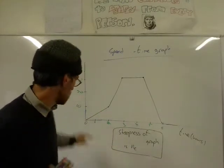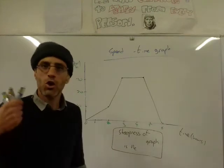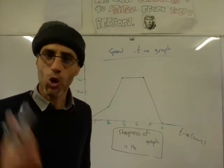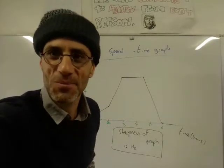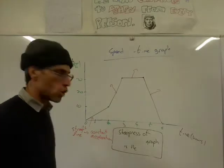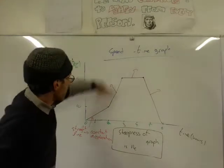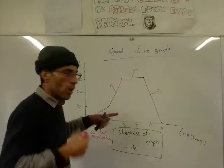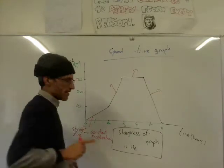A straight line here means constant acceleration. The speed is increasing from 0 to 10 — it's increasing gradually. We have constant acceleration. So on a speed-time graph, a straight line means constant acceleration. Now here we have another straight line, so obviously it's another constant acceleration.